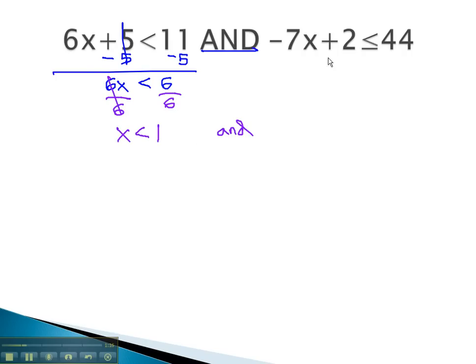And for the other inequality, we simply subtract 2, and we get negative 7x is less than or equal to 42. And finally, divide by negative 7. Notice we've divided by a negative, which means we need to flip the inequality symbol the other direction. x is greater than or equal to negative 6.